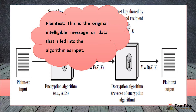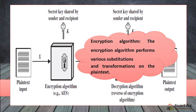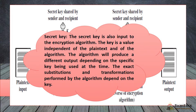First: Plain Text. This is the original intelligible message or data that is fed into the algorithm as input — it is normal text. Encryption Algorithm: The encryption algorithm performs various substitutions and transformations on the plain text, using many techniques.